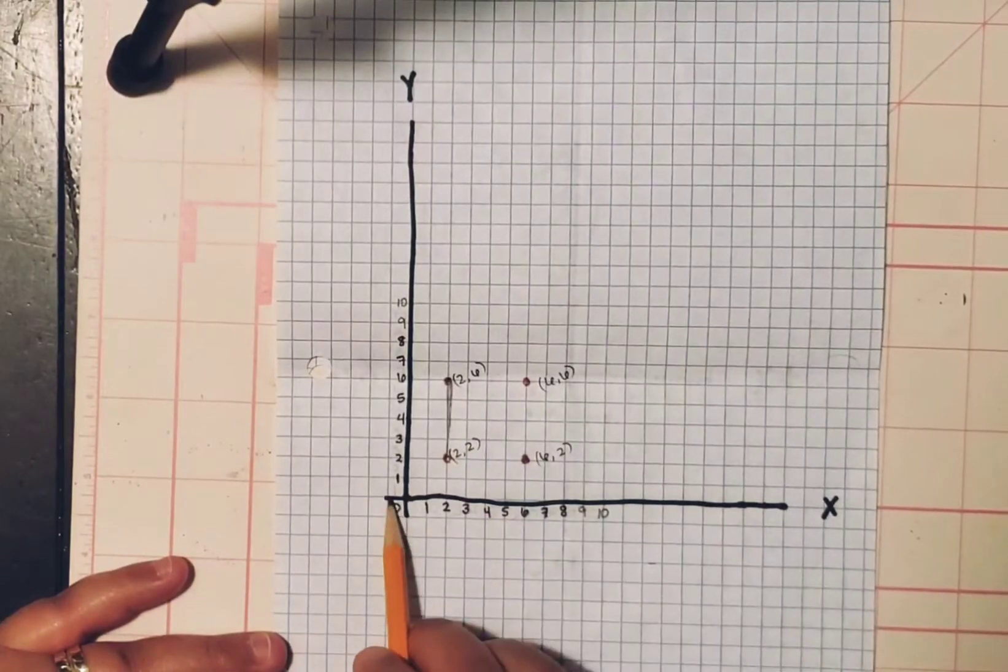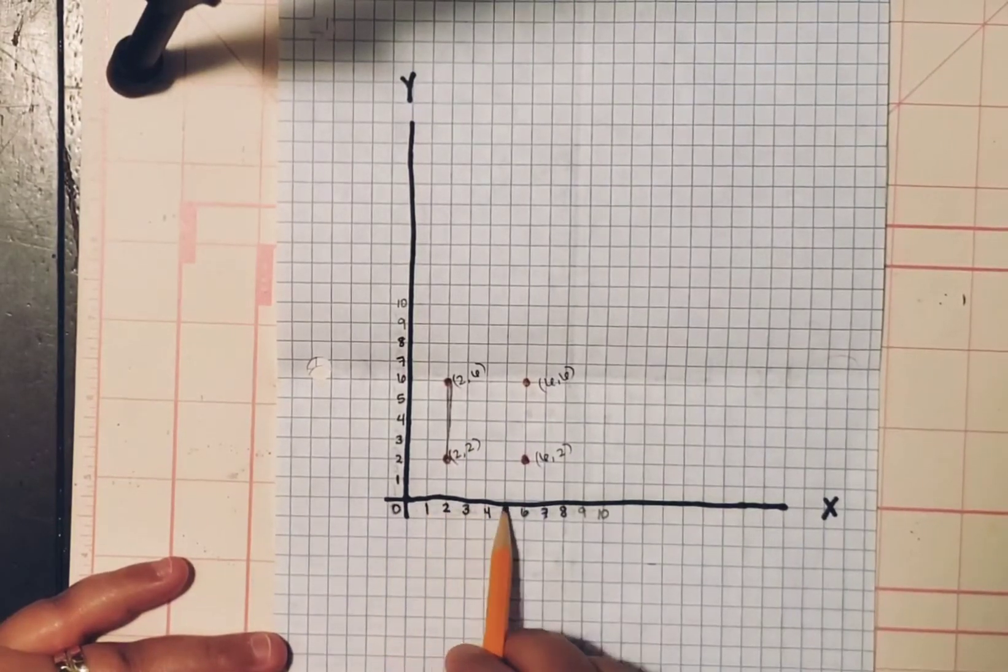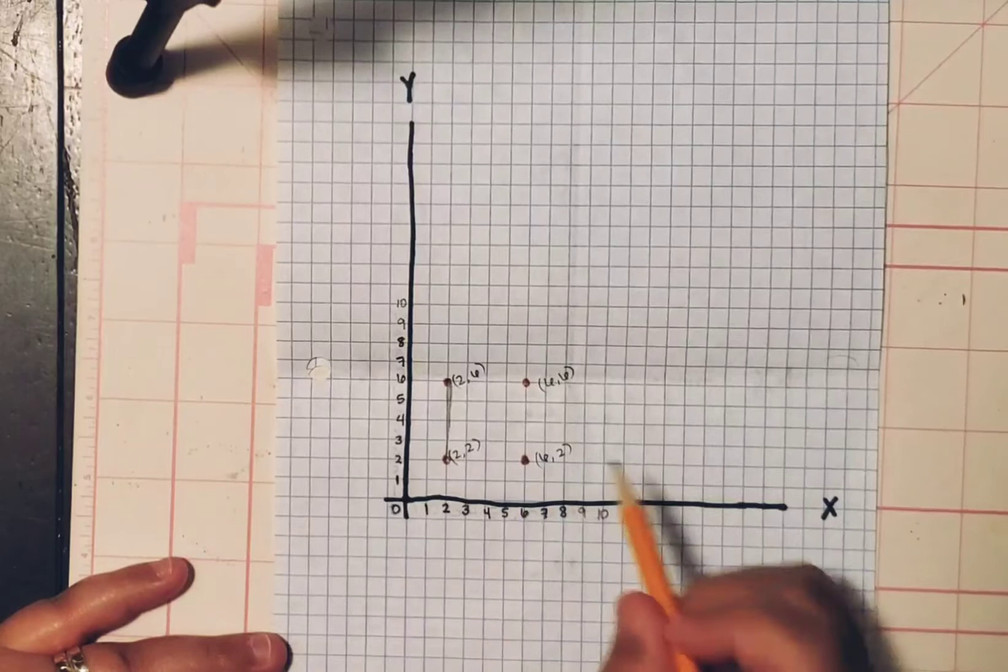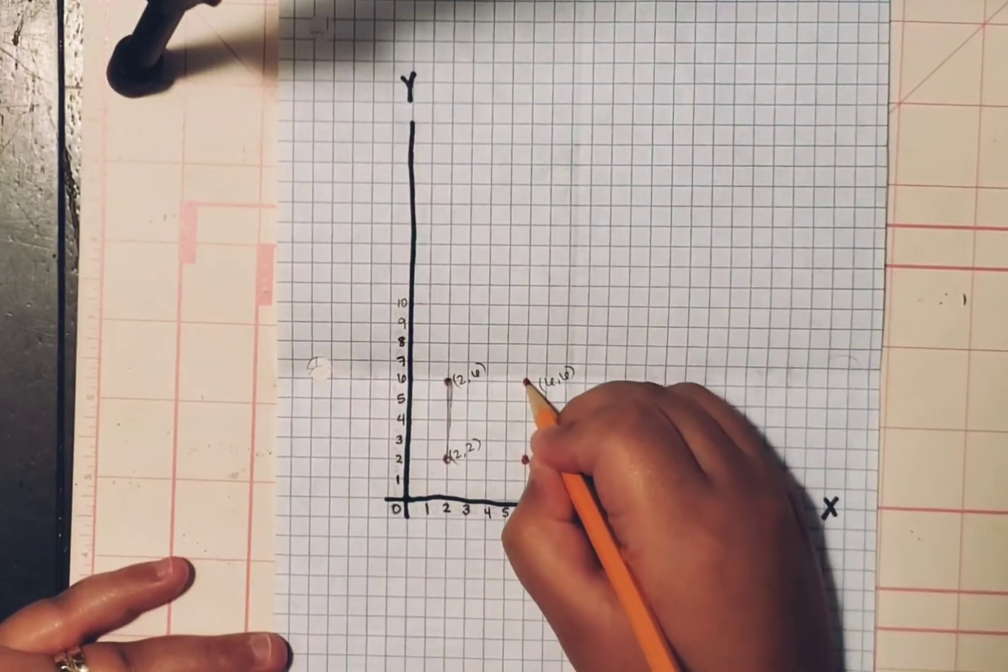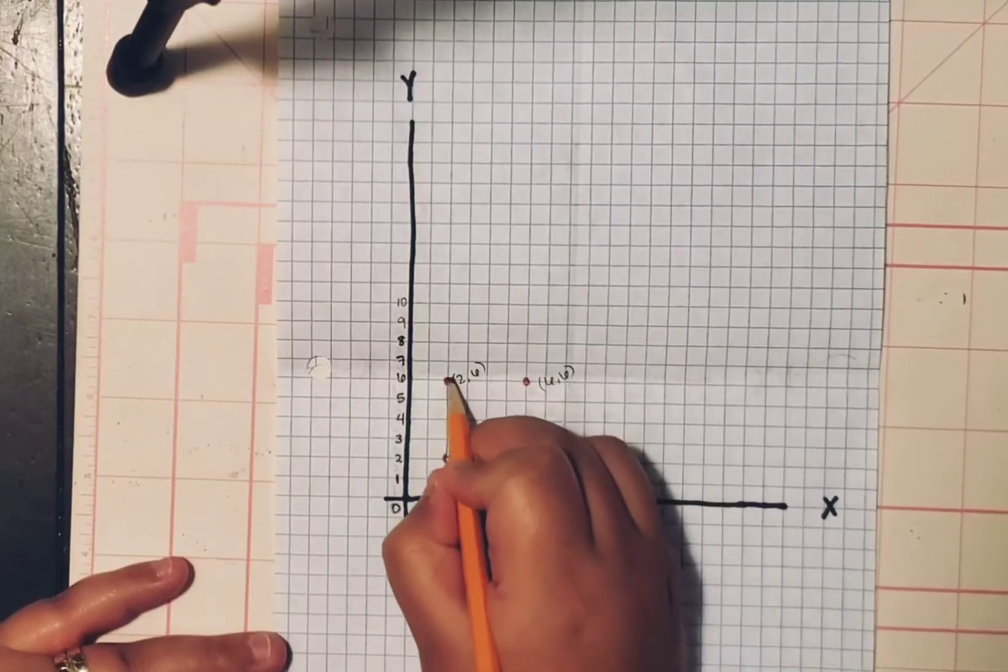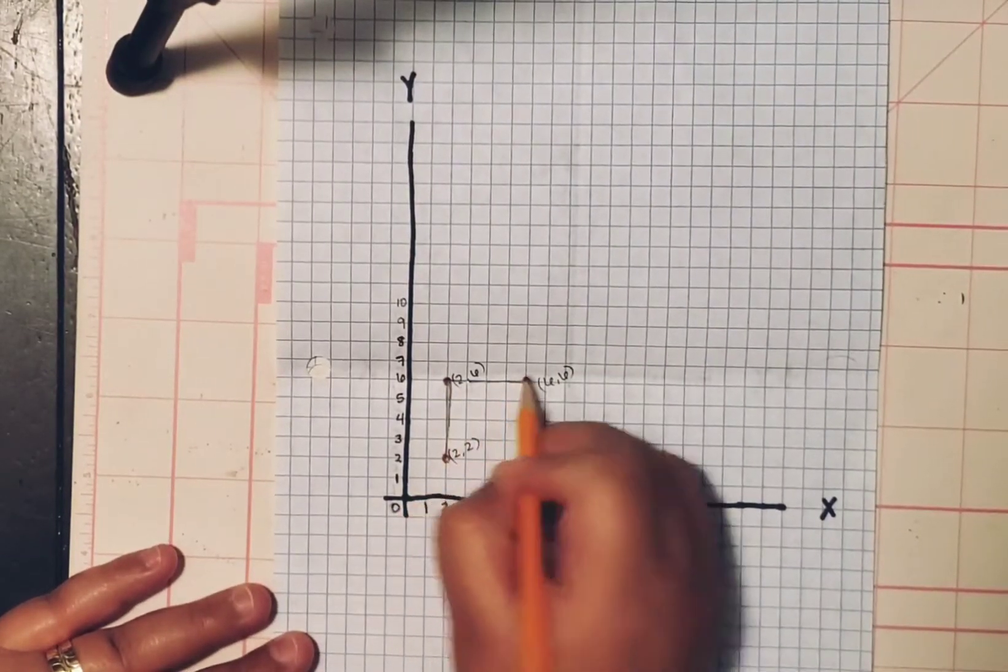Next one. We start on the X line. And we moved six to the right. And we will move six up.